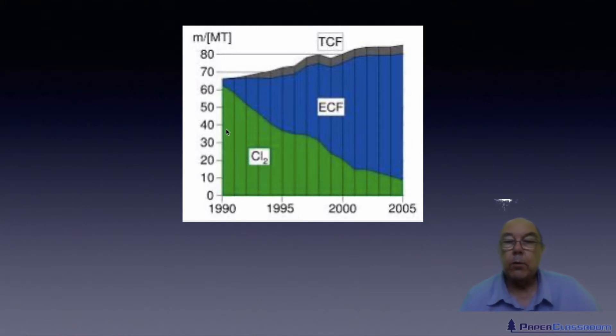So, to summarize it, we're moving away from elemental chlorine. The bulk of the bleaching is done with elemental chlorine free materials, and there are some furnishes that we bleach by the totally chlorine free system.